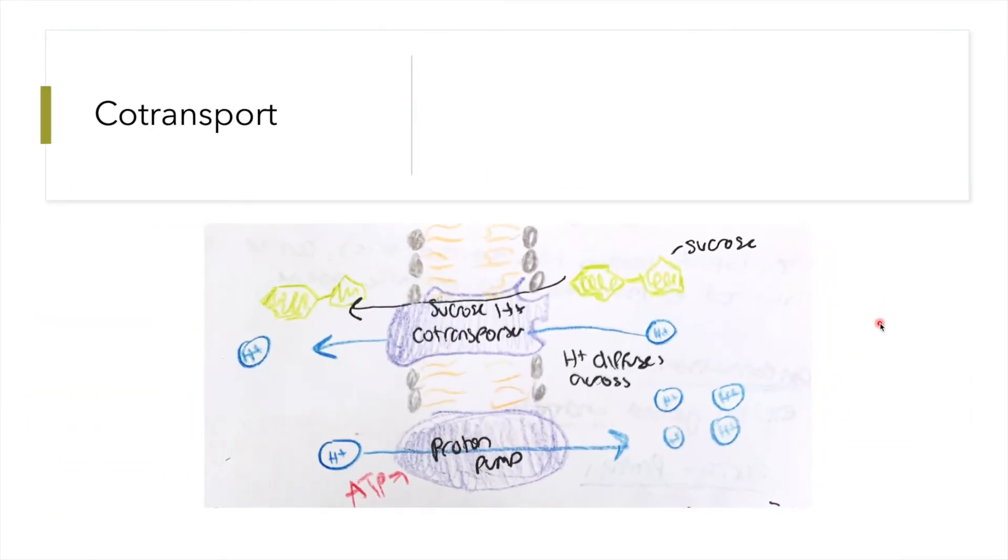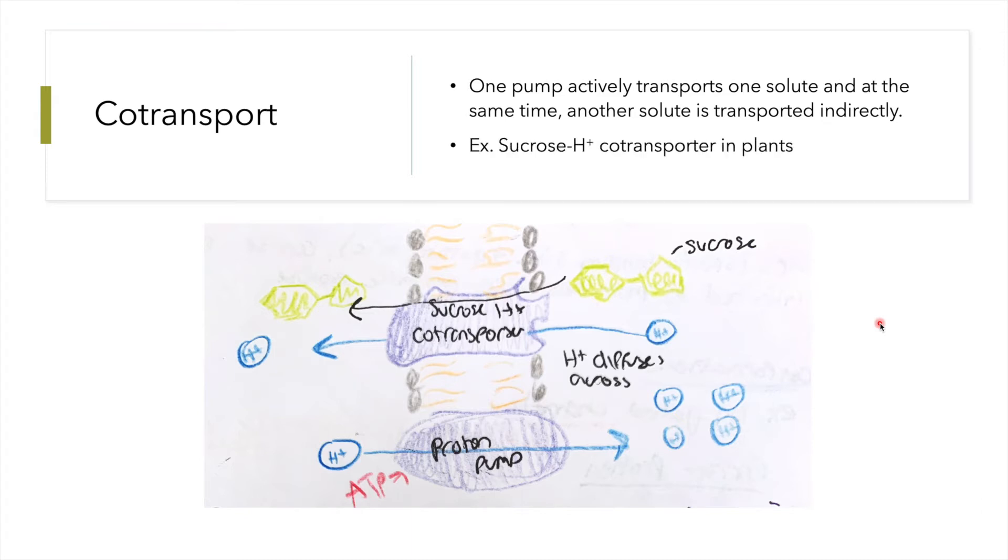Now let's talk about co-transport. Co-transport occurs when one ATP-powered pump actively transports one solute and at the same time transports another solute indirectly. A good example of co-transport is the sucrose hydrogen ion co-transporter in plants. Plants use this to get sucrose in their cells.